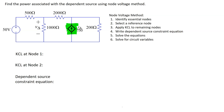In this example, we are going to apply the node voltage method to a circuit containing a voltage controlled current source. In this given circuit, we have one ideal independent voltage source and this circuit component is the dependent source. The symbol has an arrow inside, which means this component is a dependent current source, and the magnitude has the voltage variable V_delta. So this dependent source is a voltage controlled current source.